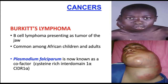There can also be involvement of the small intestines, kidneys, ovaries, and breasts, but the jaw is the most common site. Recently, it has been discovered that Plasmodium falciparum is a cofactor of Burkitt's lymphoma alongside Epstein-Barr virus, because of the cysteine-rich interdomain 1-alpha, or CIDR1-alpha, of Plasmodium falciparum.